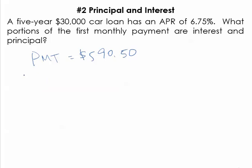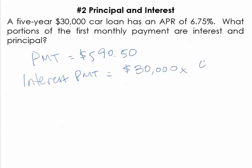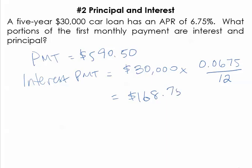To calculate the interest portion of a payment, we take the outstanding balance, which is $30,000 at the beginning, and simply multiply it by the periodic interest rate. So we need to take the APR and divide it by 12 to make it periodic. So $168.75 is the interest portion of the very first payment.